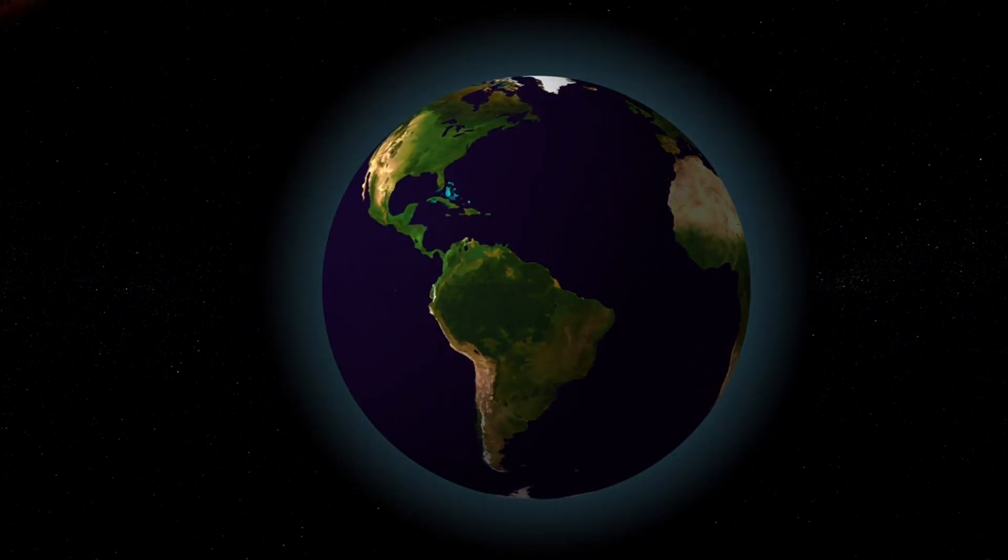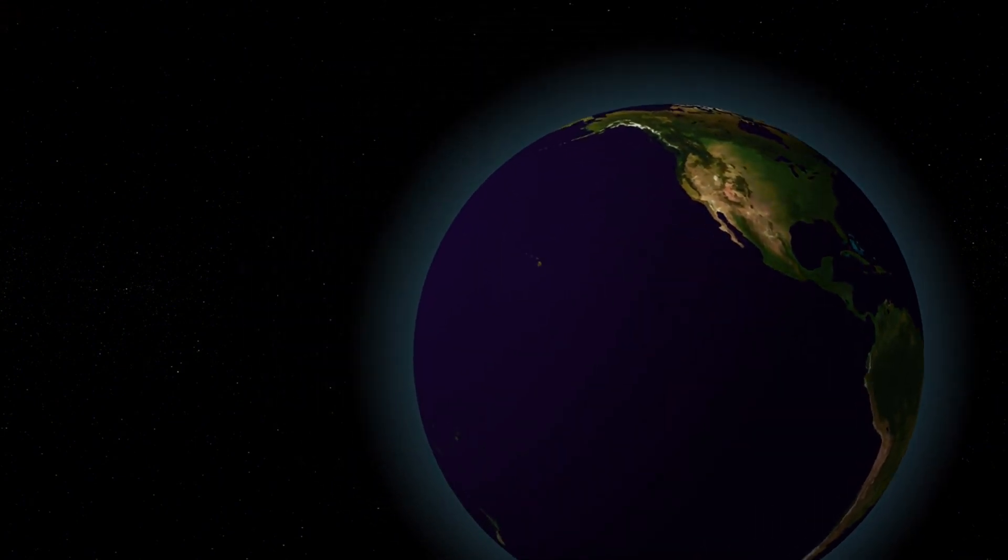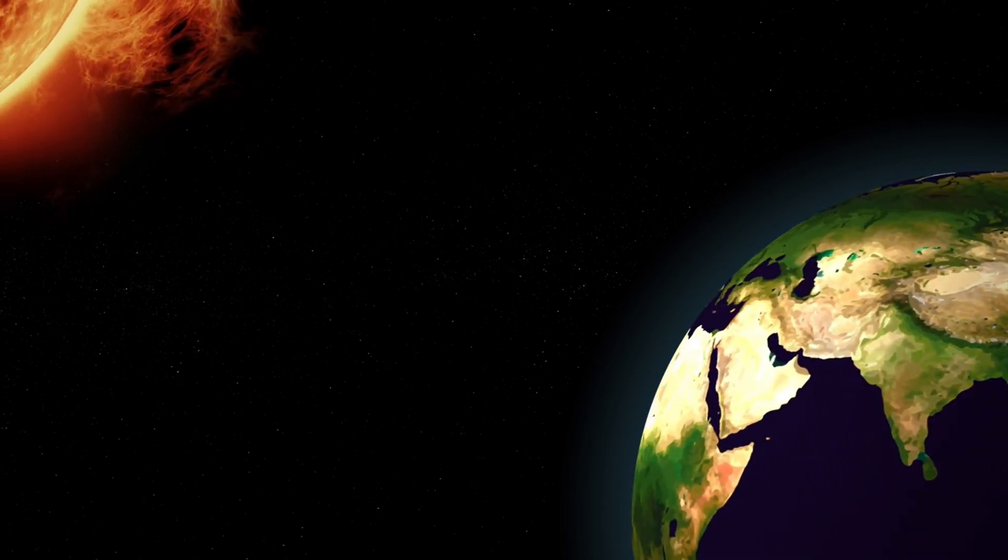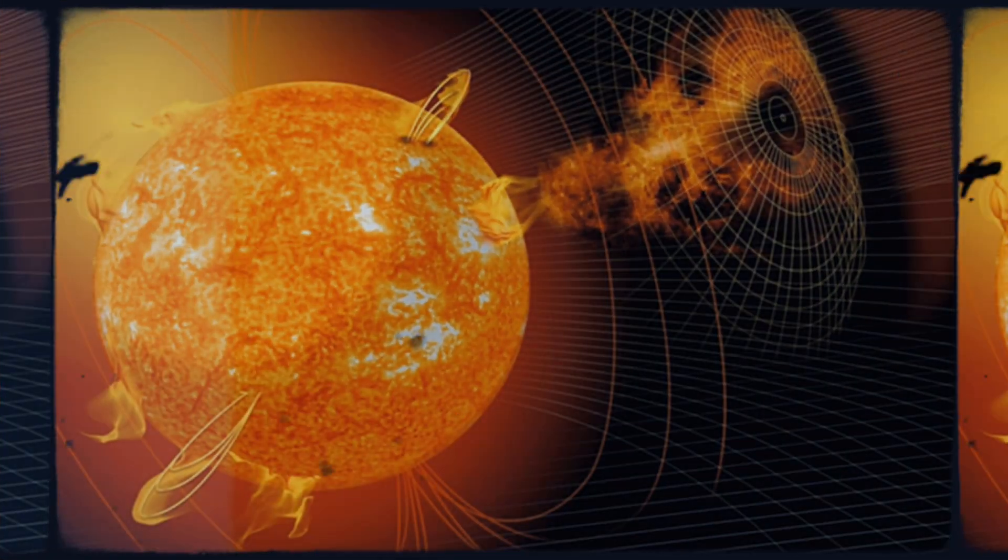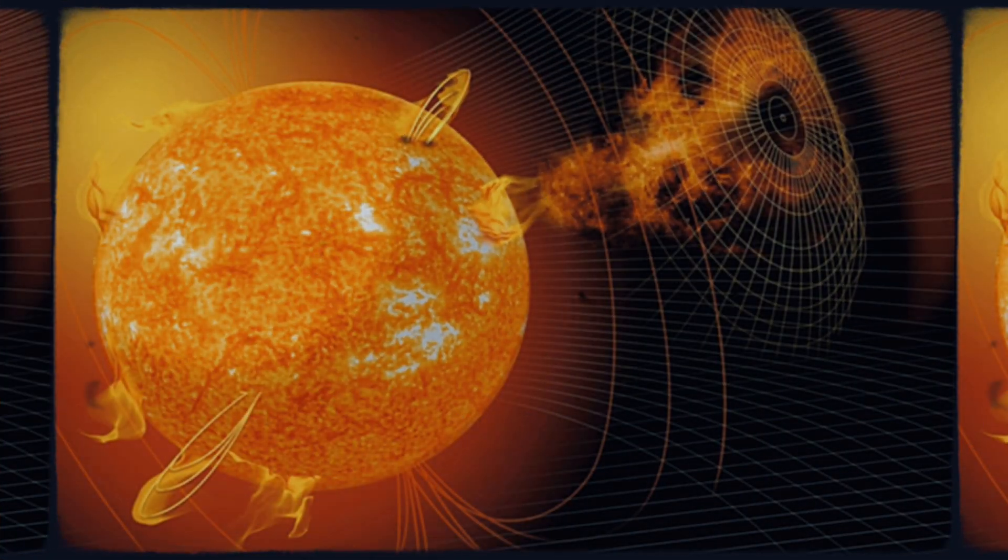The solar cycle, marked by variations in solar activity, influences space weather patterns and has implications for Earth's climate. A deeper comprehension of these internal processes could lead to improved predictive models, aiding our ability to anticipate changes in solar activity and their potential effects on our planet.